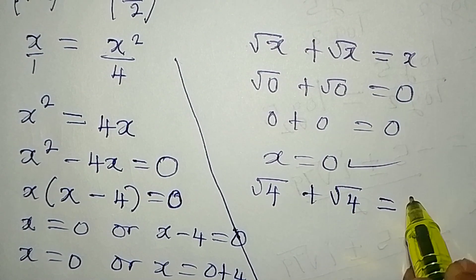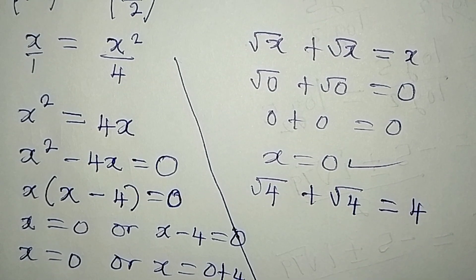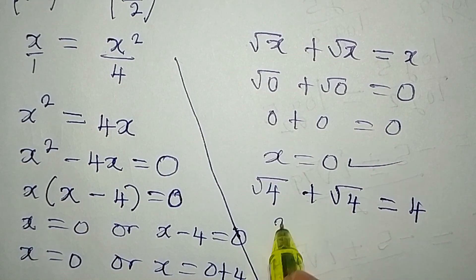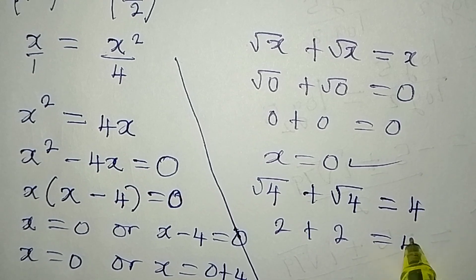So we have this to be equal to 4. Is that correct? Yes, because square root of 4 is 2, then we have plus 2. This is giving us 4.